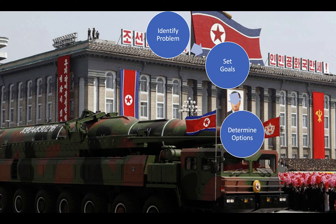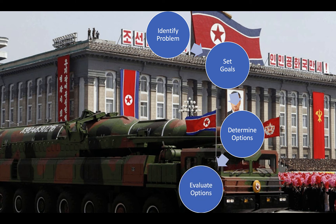Next, decision makers will gather information about the problem and determine what options might be available to them to achieve their goals. In our hypothetical example, policymakers may consider a number of policy options — maybe diplomatic negotiations with North Korea, economic sanctions, a cyber attack, limited airstrikes, a full-scale military invasion, or some other set of options. Then, the various alternatives are evaluated. Policymakers will consider the potential consequences, the effectiveness, and the cost and benefits of each alternative, and the probability that each will lead to the preferred outcome — that is, to success.